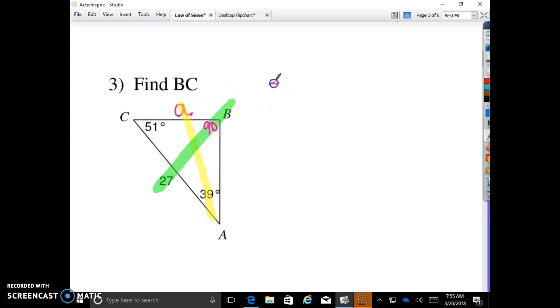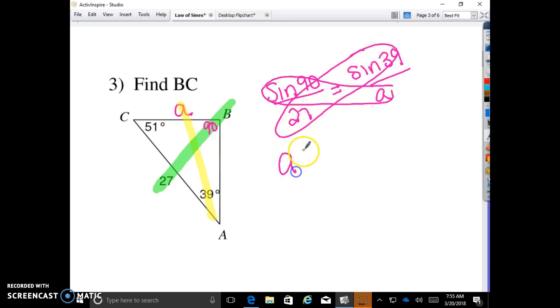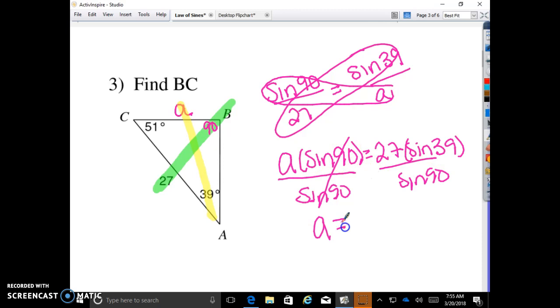So sine of 90 is to 27 as sine of 39 is to A. Cross products and solve. A times sine of 90 equals 27 times sine of 39. Divide by sine of 90 on both sides. And you get that A equals, pick up your calculator, 39 sine times 27 equals divided by 90 sine of 90 equals. And I got 16.99165 and so on. Round it to the nearest tenth. It's going to actually end up being 17.0 because that nine becomes a 10.